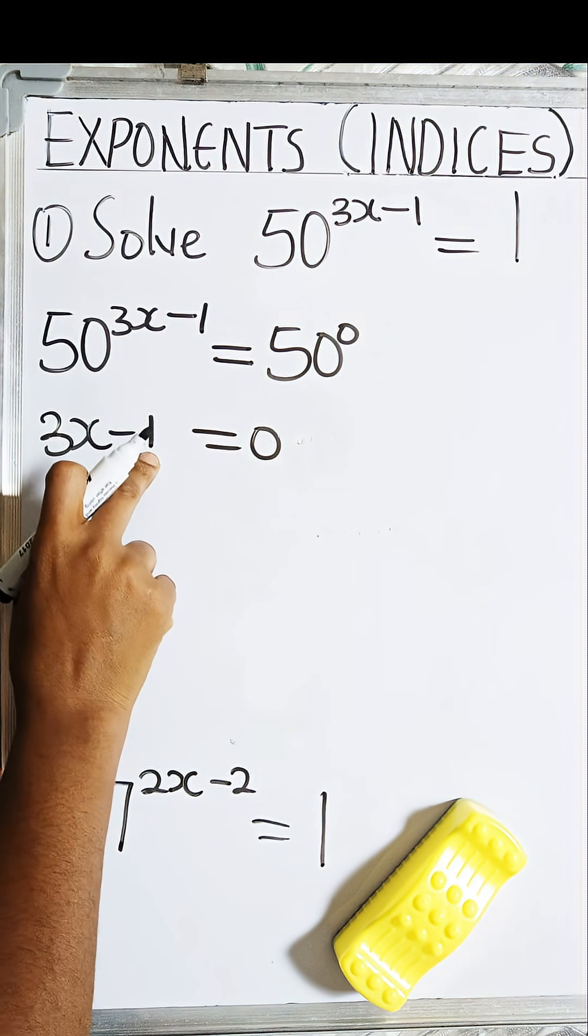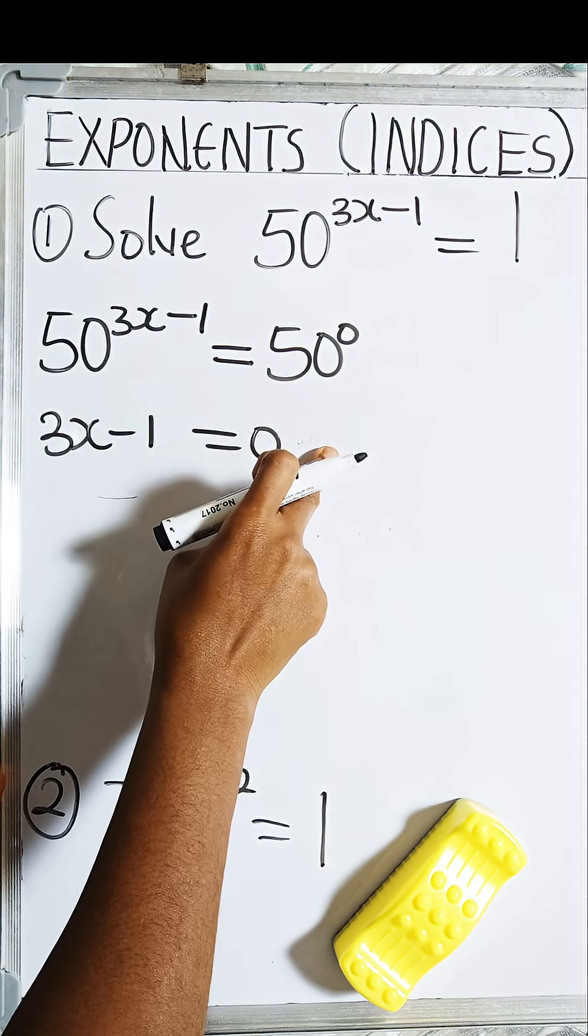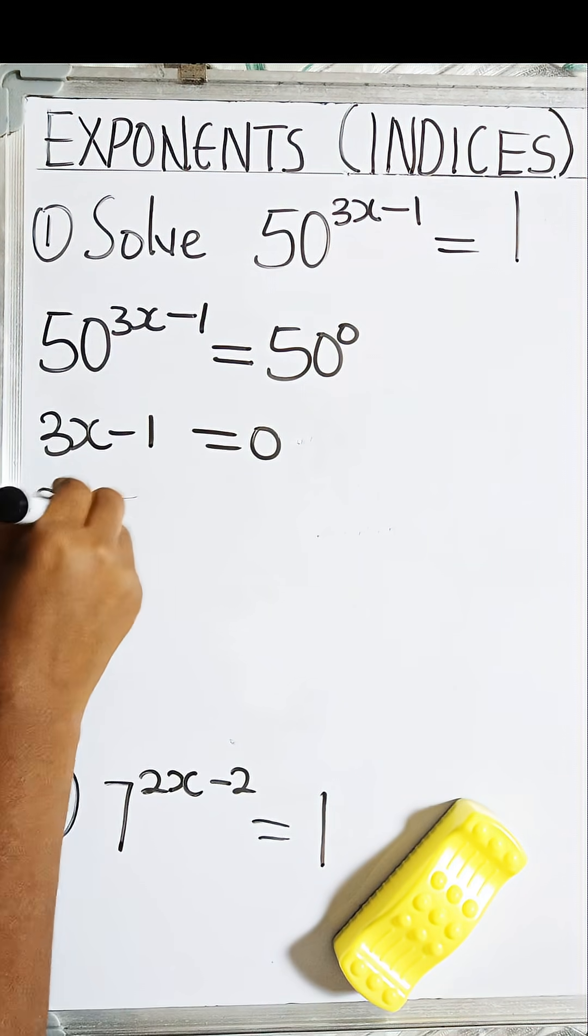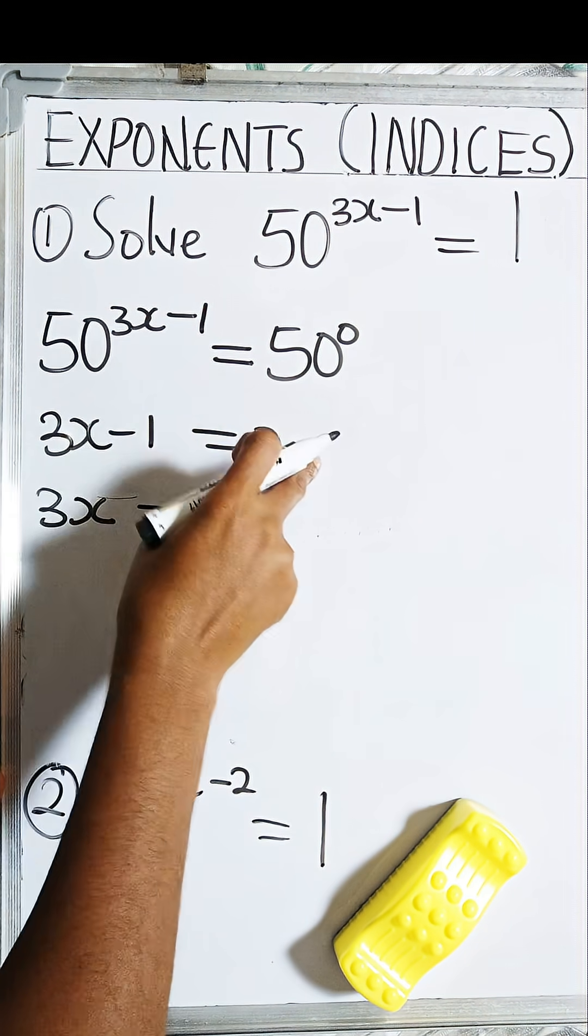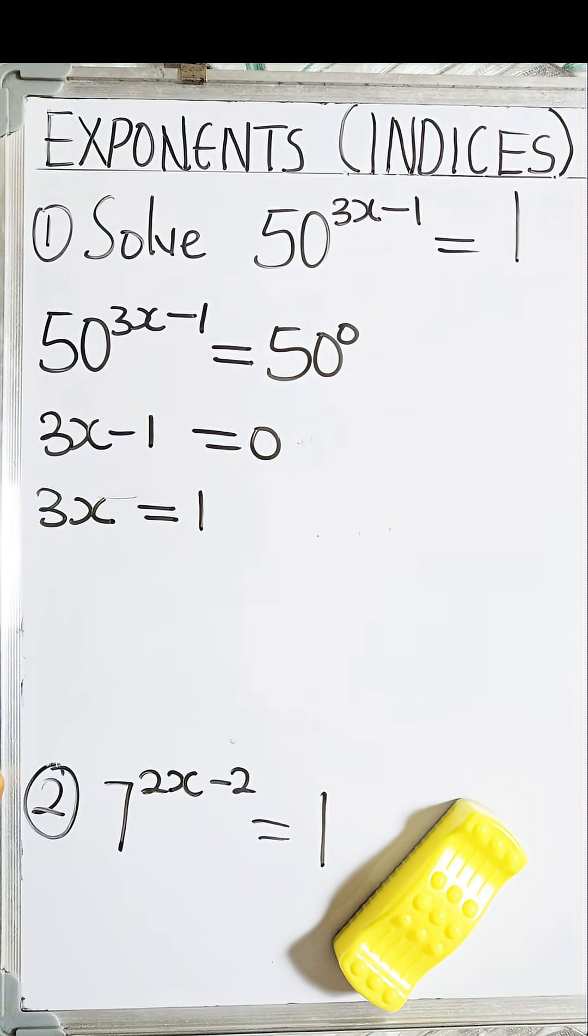So looking for x, I first have to move this -1 to this side of the equation. So I have 3x equals to, when -1 crosses the equality sign, it becomes +1.